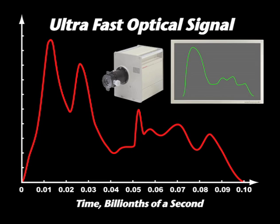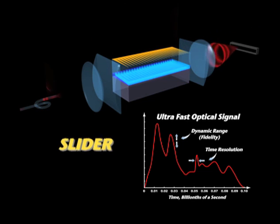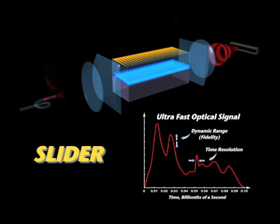A top-of-the-line streak camera would perform better, but there would be a trade-off between resolution and fidelity. Using our advanced concept called SLIDER, we can achieve both fine resolution and high fidelity.